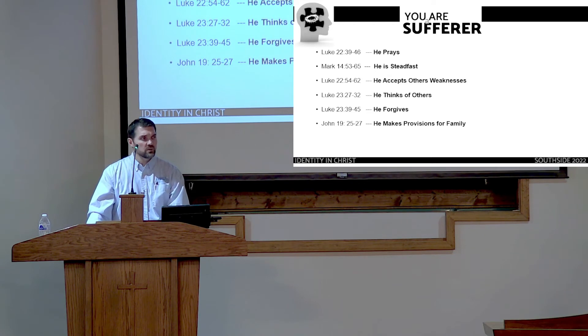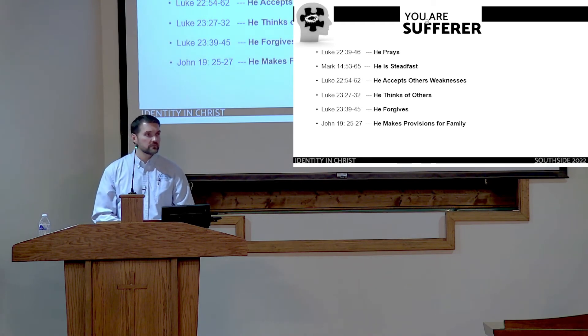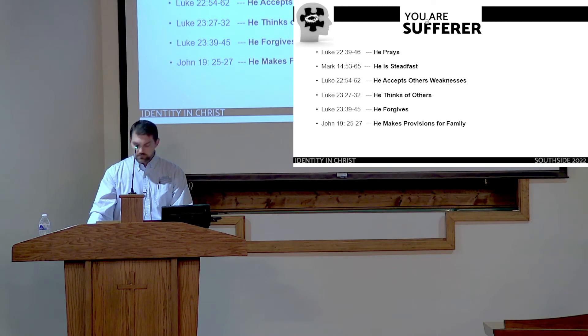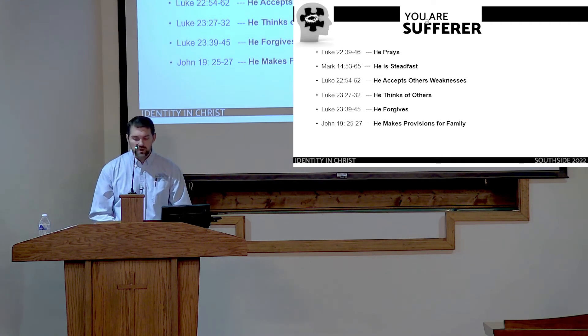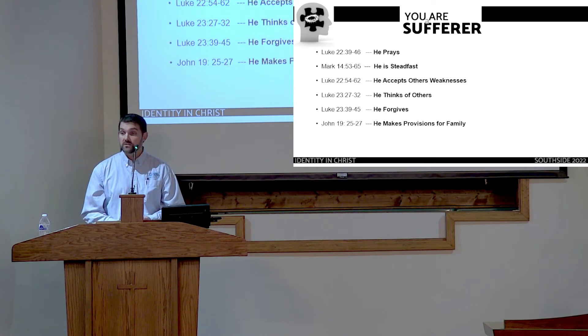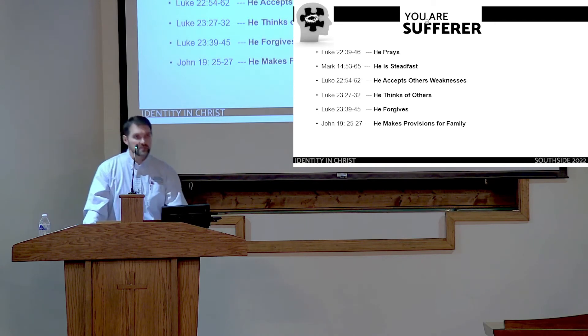Luke 23, beginning in verse 27, when Jesus meets the women of Jerusalem on His walk to Calvary with the cross on His shoulders, He thinks of others. In Luke chapter 23, beginning in verse 39, Jesus promises His kingdom to the good thief. While hanging and bleeding on the cross, He hears the repentance of the thief beside Him and He forgives. In John chapter 19, verse 25-27, Jesus speaking to His mother and the disciple that's with her, as Jesus is about to accomplish His work and He nears physical death, He looks down from the cross and He watches over His family and makes provisions for them. As Jesus responds to His sorrow, He's expressing to us the best of what it means to be human.